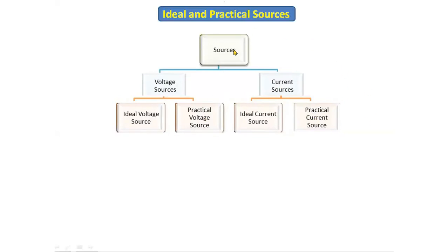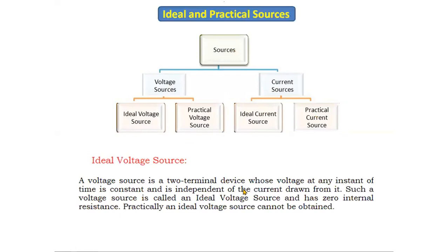Now if you see the ideal voltage source definition: an ideal voltage source is a two-terminal device whose voltage at any instant of time is constant and is independent of the current drawn from it. Such a voltage source is called an ideal voltage source and has zero internal resistance. Practically, an ideal voltage source cannot be obtained. In the ideal voltage source there is no internal resistance and we get constant voltage.